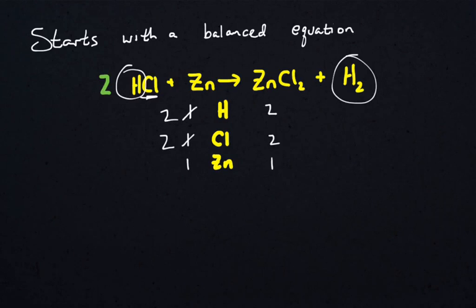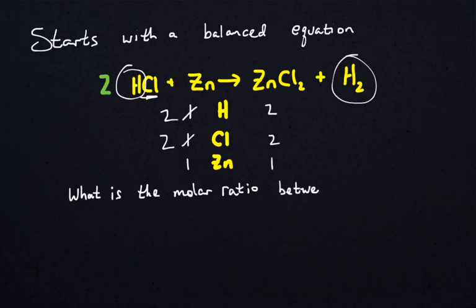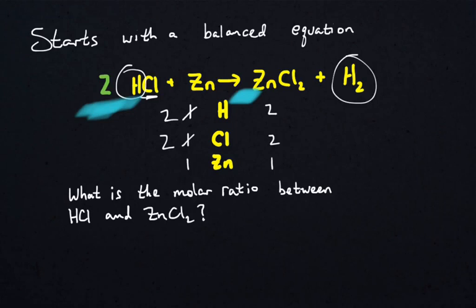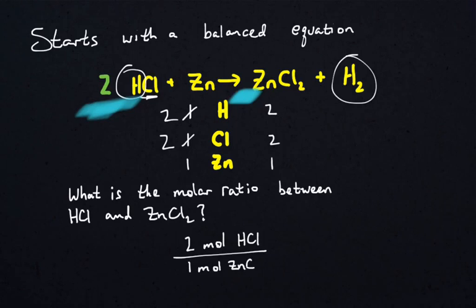Just by putting that two in front of the HCl on the left, I now have the same amount of the reactants as the products, and that's good — we're now nice and balanced. So the question is, what is the molar ratio between HCl and ZnCl₂? What you do is look at the coefficient in front of each compound. There's a two in front of the HCl, so we have two moles of HCl. There's no number in front of the ZnCl₂, so that implies there's one mole of ZnCl₂. The correct answer is two moles HCl per one mole ZnCl₂. It's that simple.